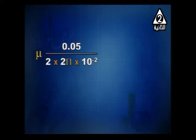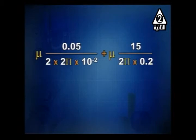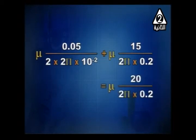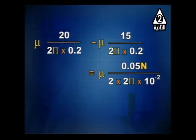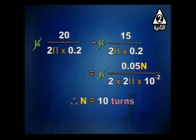Setting up the equation: μ × (0.05N) / (2 × 2π × 10⁻²) + μ × 15 / (2π × 0.2) = μ × 20 / (2π × 0.2). Rearranging: μ × 20/(2π × 0.2) − μ × 15/(2π × 0.2) = μ × 0.05N / (2 × 2π × 10⁻²). Permeability cancels out, and solving gives number of turns N = 10.